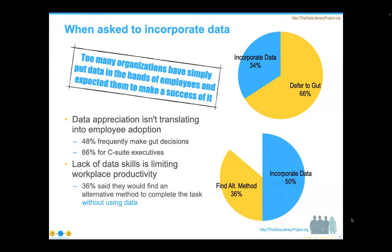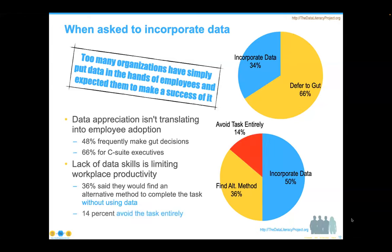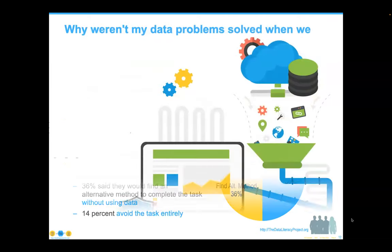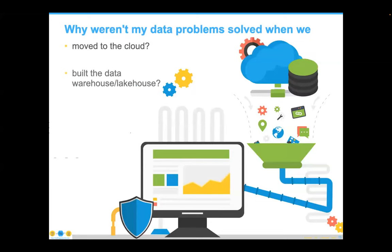It gets more pronounced as we go up the chain. Two-thirds of executives will defer to their gut as opposed to incorporating data into their decisions. The lack of data skills is really limiting workplace productivity: 50% of workers incorporate data, 36% say they'll find an alternative method to complete the task without using data, and 14% will avoid the task entirely.